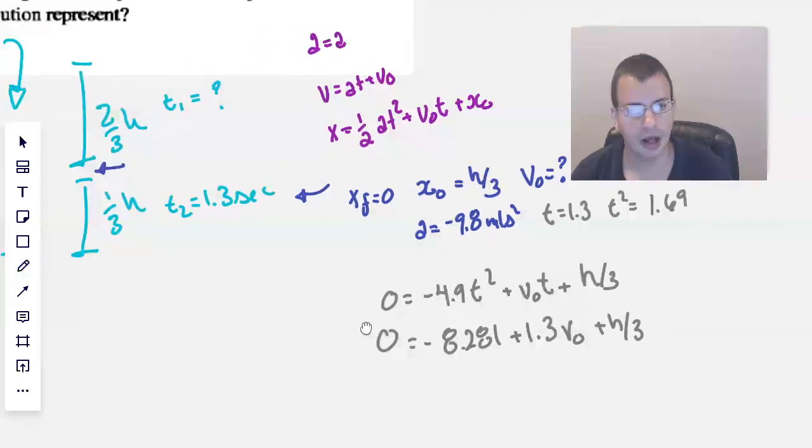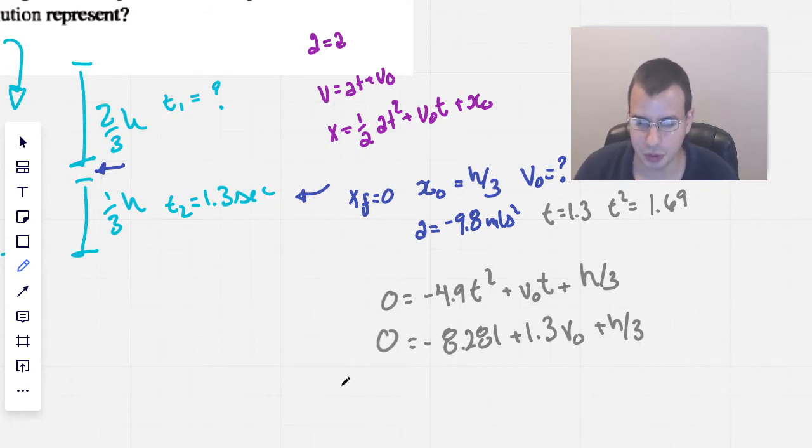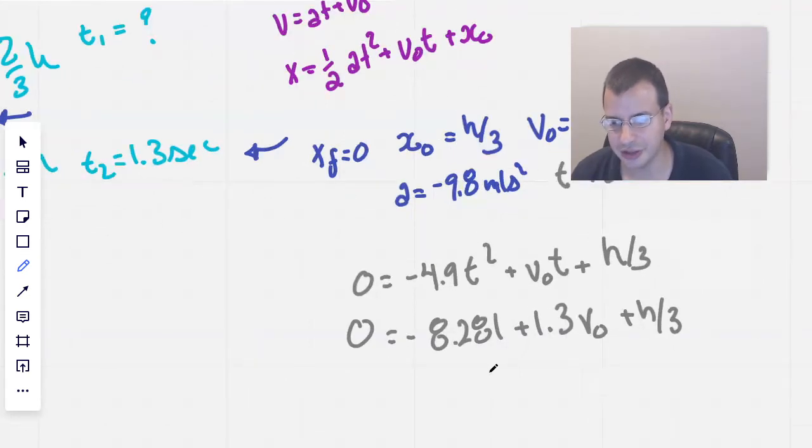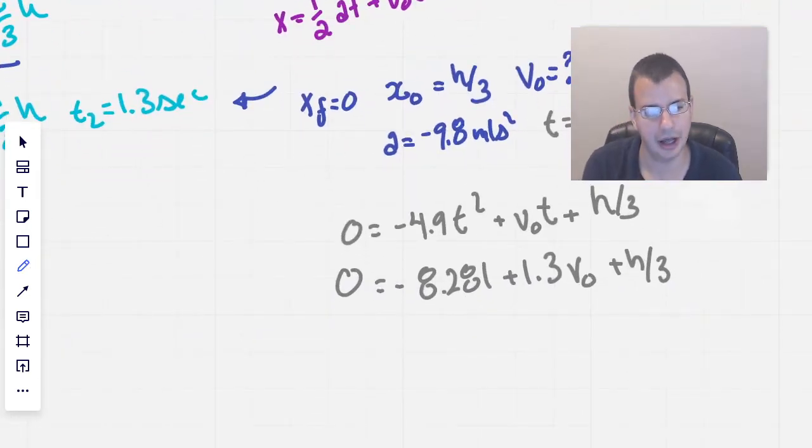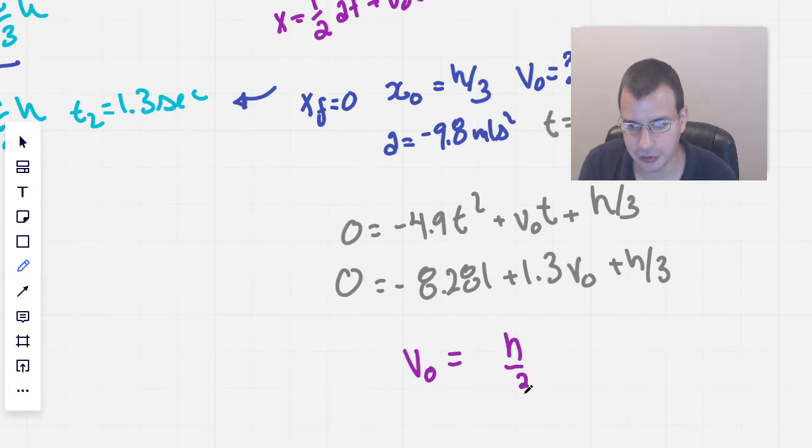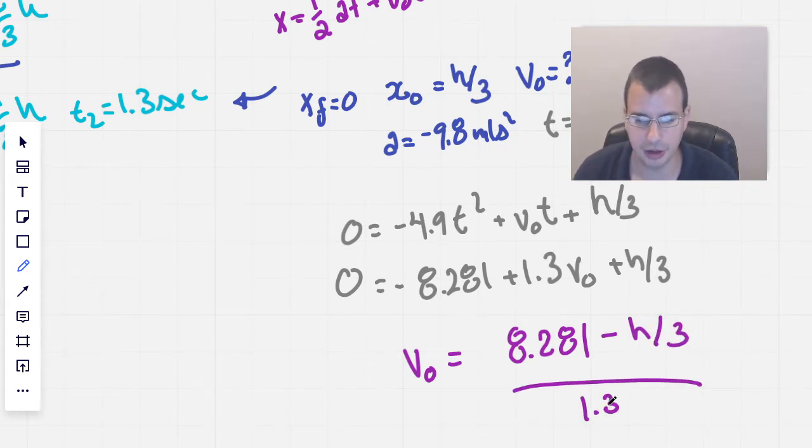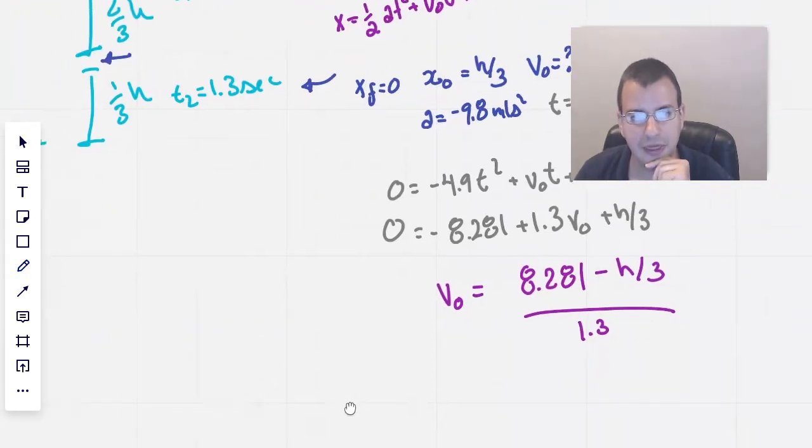We're also going to, do we want to use this part? Now we have this one equation. I'm going to solve this for V naught. Maybe I want to solve it for H over 3. I'm going to say V naught equals 8.281 minus H over 3 all over 1.3. So we have that going for us.